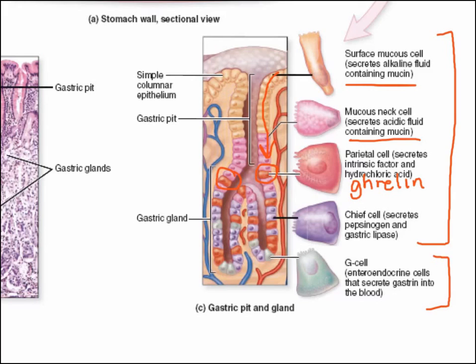There are also chief cells — called chief cells because there are more of them than any other cell type in the gastric pit. The chief cells are responsible for secretion of pepsinogen as well as gastric lipase. Pepsinogen is a precursor to pepsin. Pepsinogen needs to be secreted in its inactive form because if it were secreted as its active form, it would digest the chief cell proteins themselves. It secretes pepsinogen, and then the acidic environment of the gastric pit allows it to become the active form, pepsin.